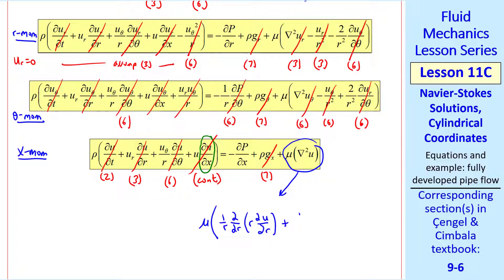When we apply the Laplacian, we get these three terms. So the two circled blue terms are the same. Well, again, nothing is a function of theta. And ∂u/∂x is zero, again by continuity. If ∂u/∂x is zero, then ∂²u/∂x² is also zero.